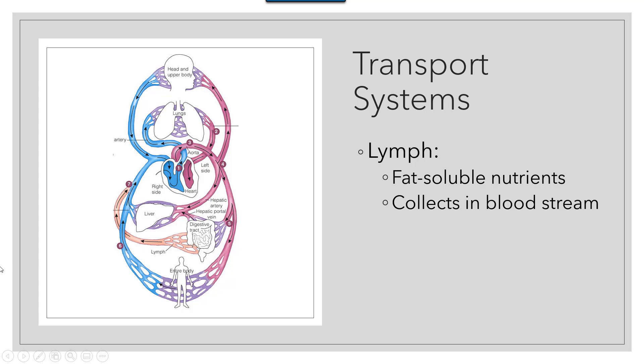Fats will be packaged up in the lymphatic system. Eventually the nutrients in the lymphatic system will enter the bloodstream near the heart. Those nutrients will join the others in the blood so they can be pumped to all the cells of the body.